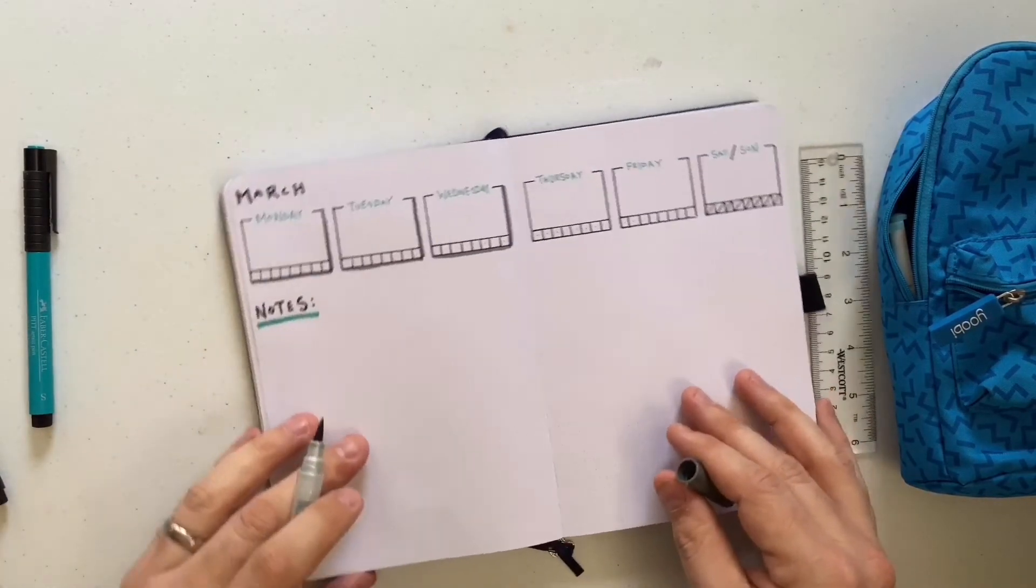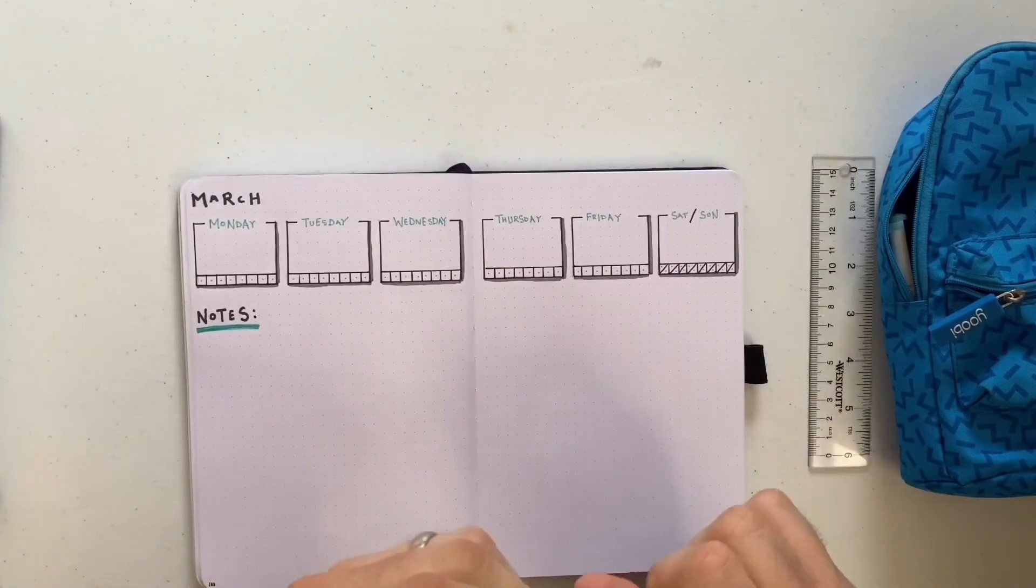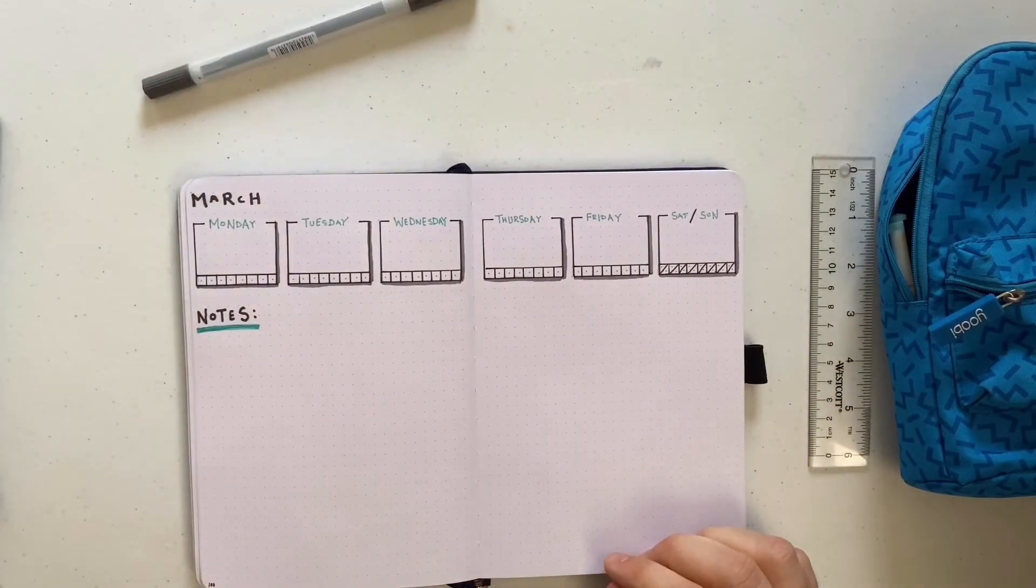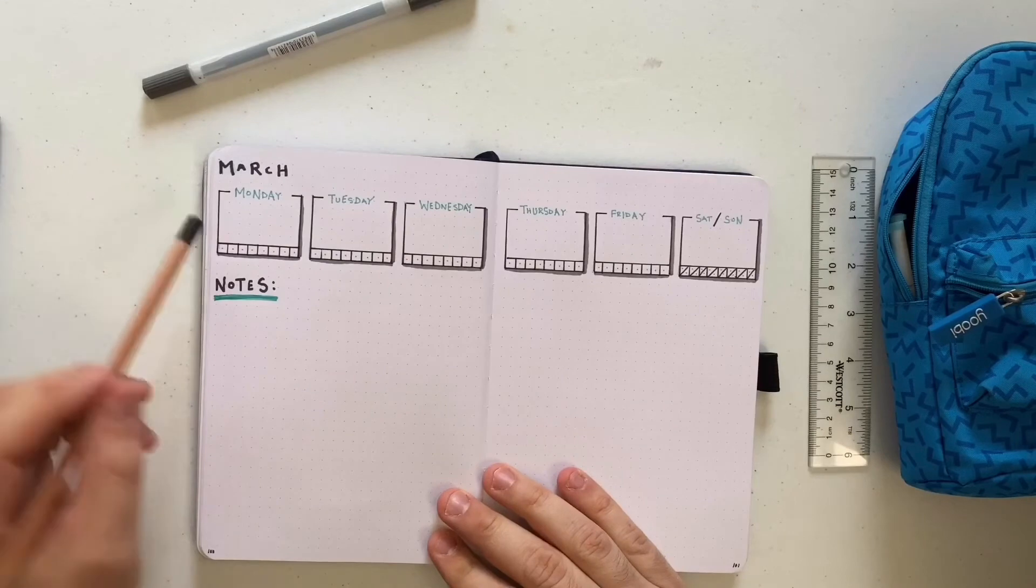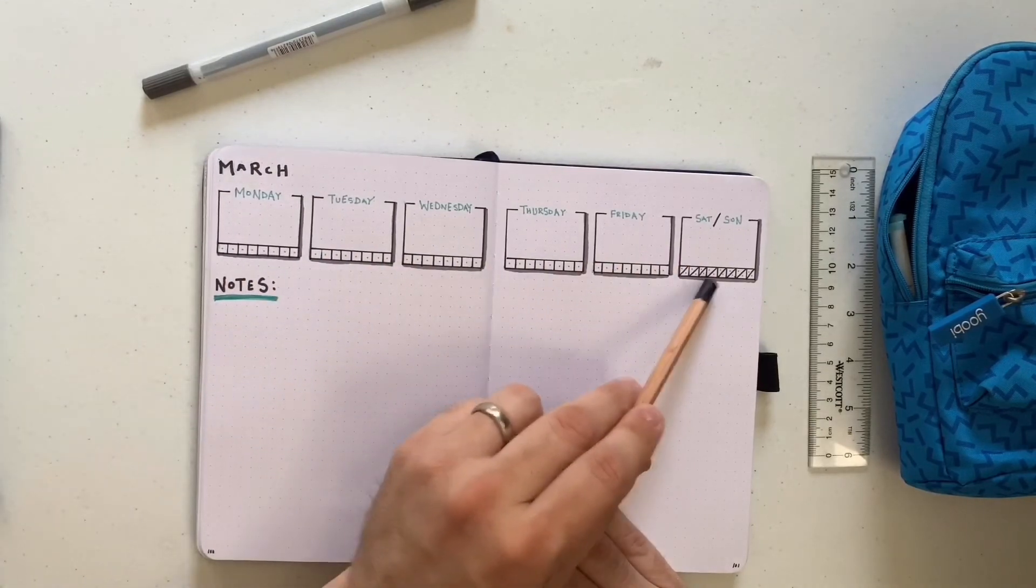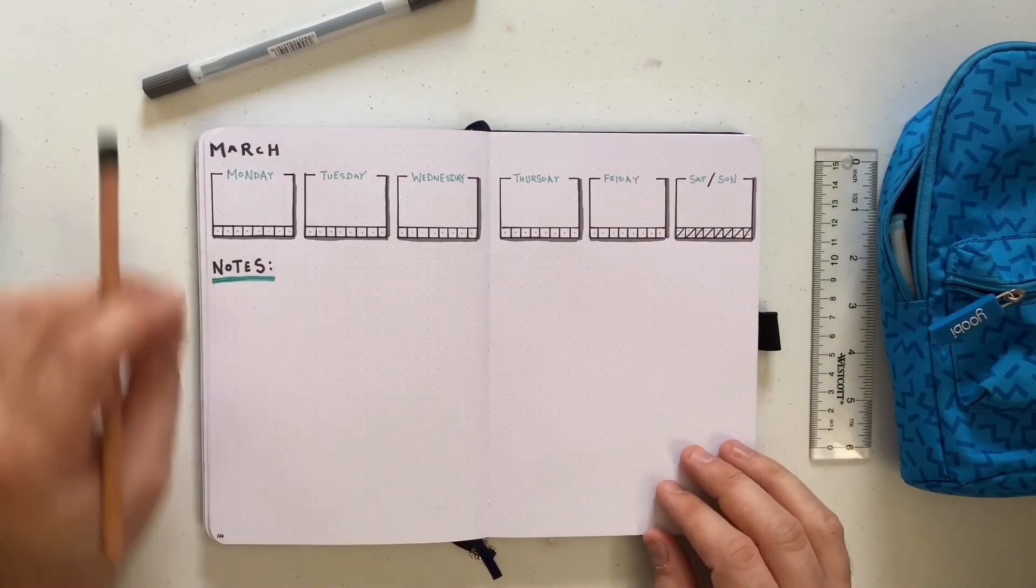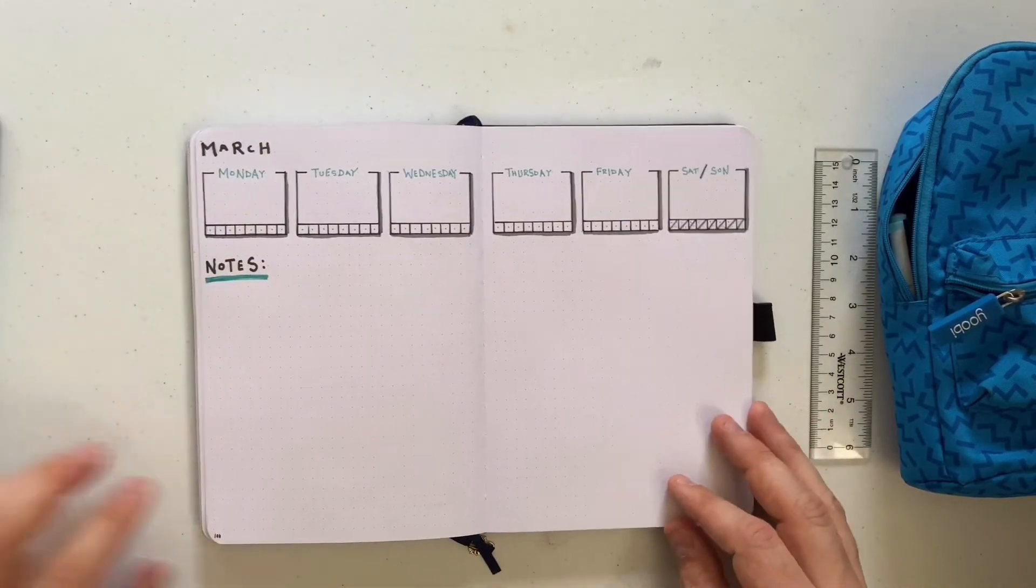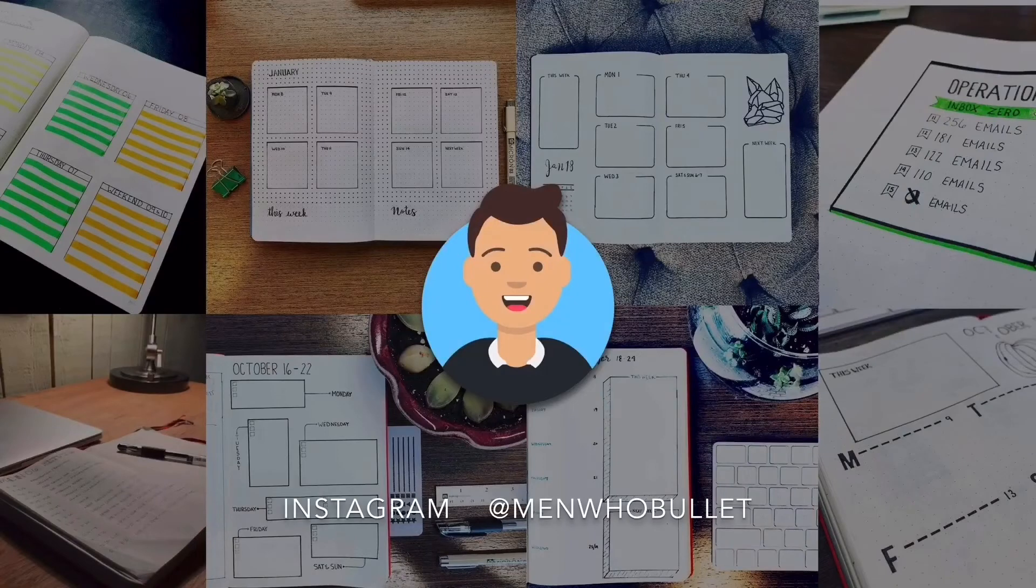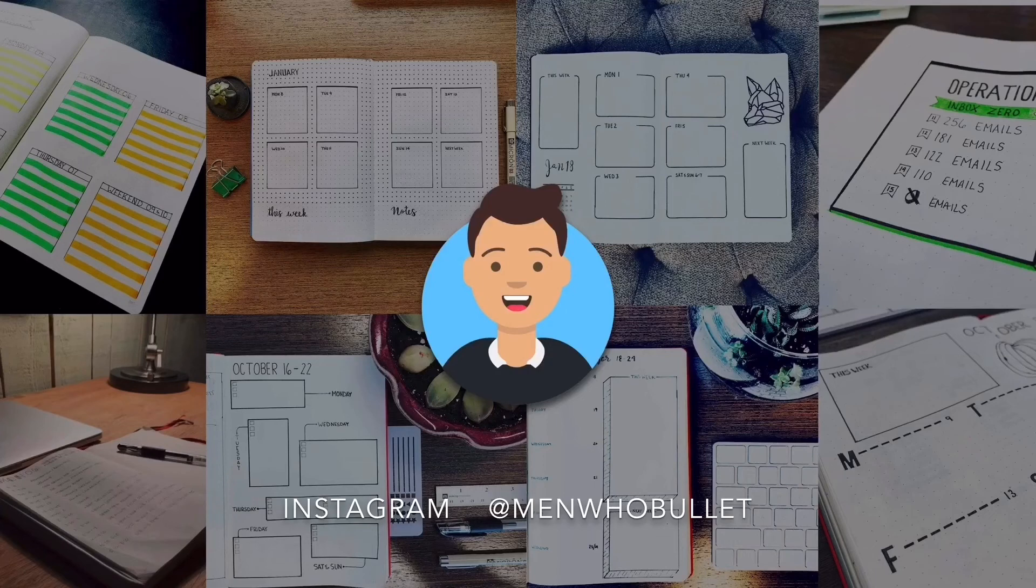All right, so we'll go ahead and finish out both sides of this and you'll see what we have here, which is our completed week. So we have our Monday through Friday and then our Saturday-Sunday split. And then we have our whole section here for tracking our water intake. And then the rest is all a notes section. So make sure to let me know in the comments below how this spread worked for you. I appreciate your time today and I'm glad to be back. Make sure to follow me on Instagram at menwhobullet and also at menwhobullet.com.